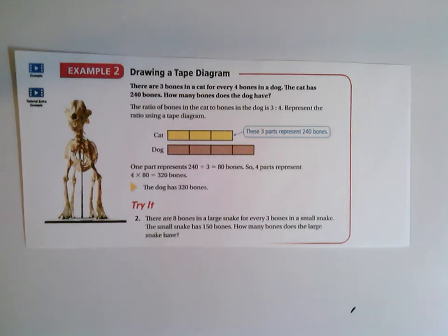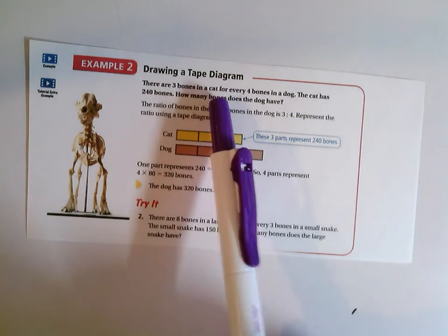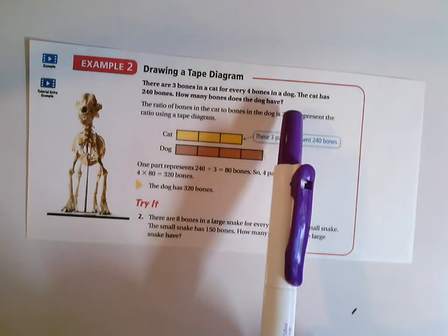Let's take a look at a few more tape diagram problems. Okay, so this problem says there are three bones in a cat for every four bones in a dog.